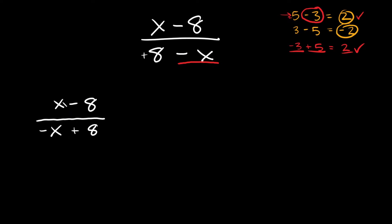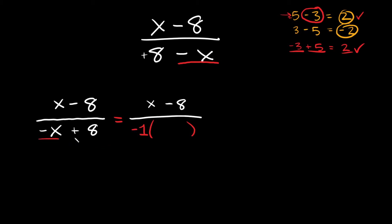Now we almost have the same thing on the top and the bottom — we have an x here and an x here, and an 8 here and an 8 here, but the signs are different. So the last thing we have to do is factor out a negative 1 from the bottom. Whenever you factor something out, it's the same thing as dividing — so we're dividing both terms by negative 1. Negative x divided by negative 1 gives us positive x, and positive 8 divided by negative 1 gives us negative 8.